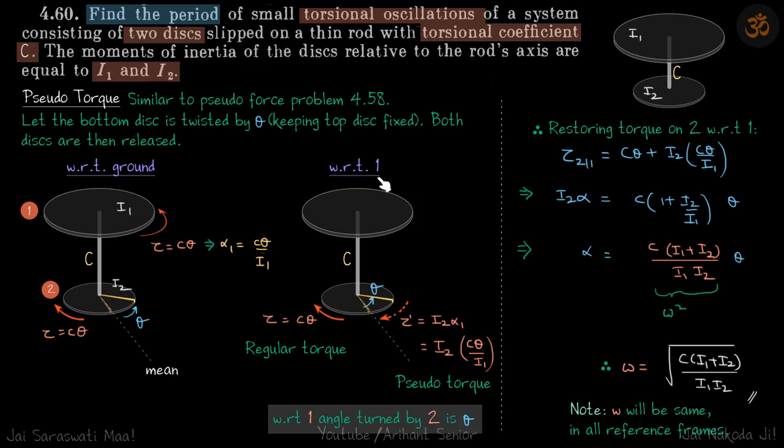Let's say we keep this top disk fixed and rotate the bottom by an angle theta, and then we release both the disks at the same time. So the relative angle turned between the disks is theta. Let's say this is the mean position. We have kept this fixed and rotated the disk by angle theta. Because the torsional coefficient is C, the torque C theta will be applied on both the disks.